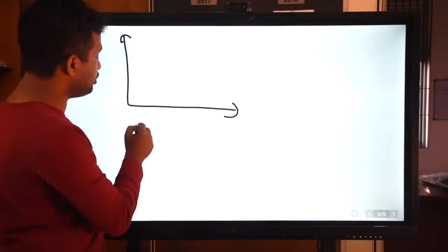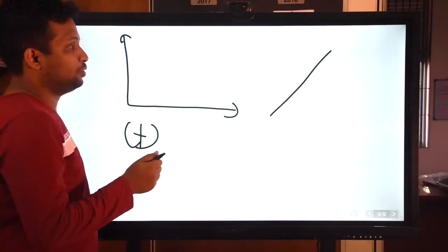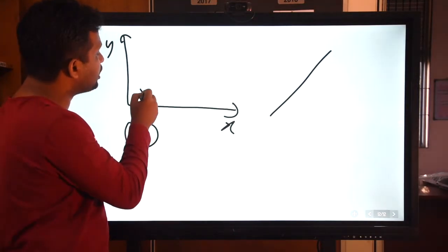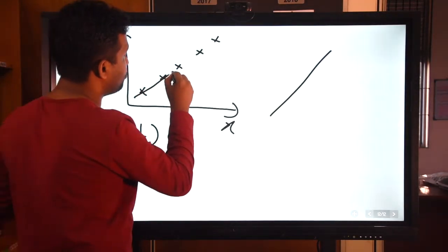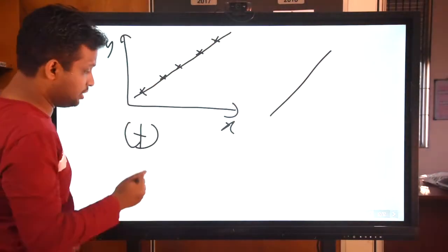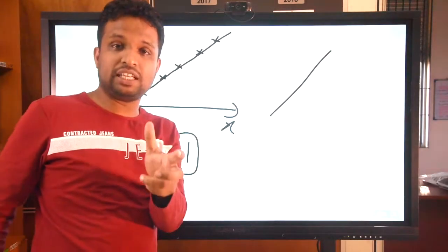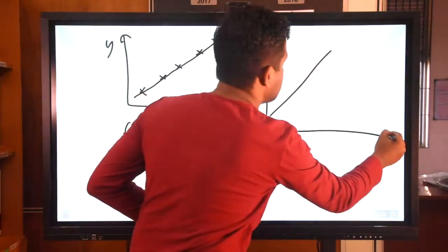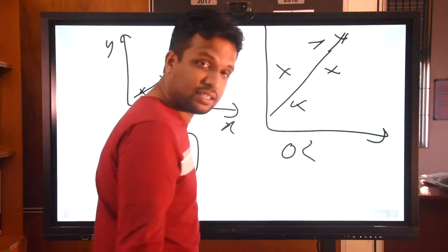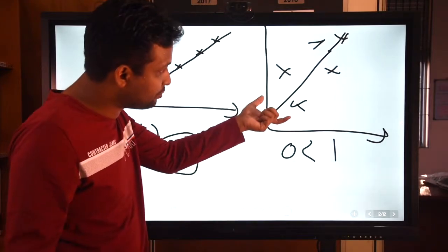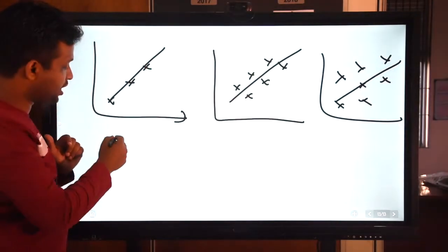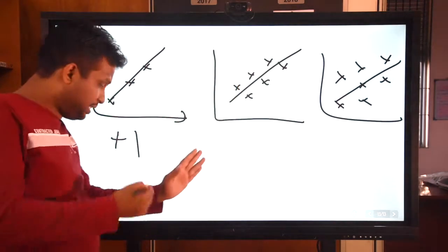In a perfect positive correlation, all points lie exactly on the best-fitted line. The maximum value in this circumstance is plus one. When the line is still positive but the points are somewhat scattered, the correlation is still positive — more than zero but less than one. In such a circumstance, the correlation will be between zero and plus one. The perfect correlation has value plus one, while an imperfect positive correlation is closer to one but less than it.